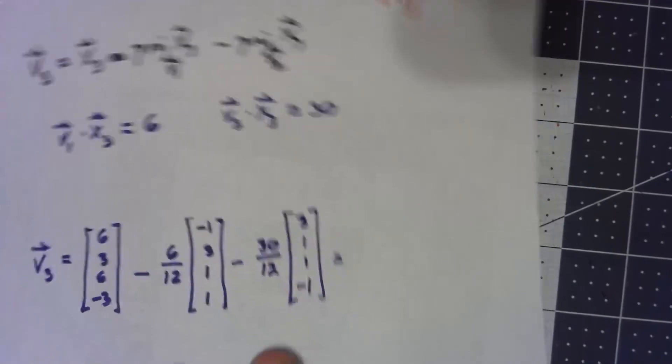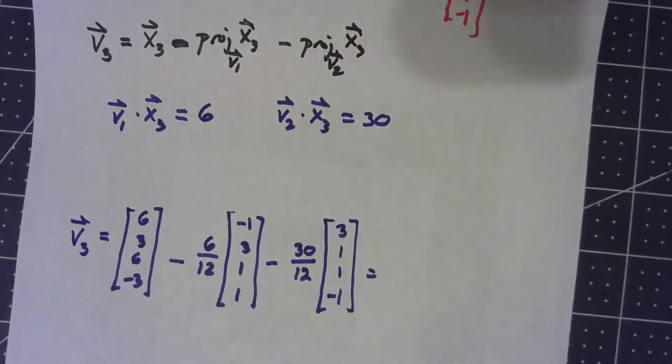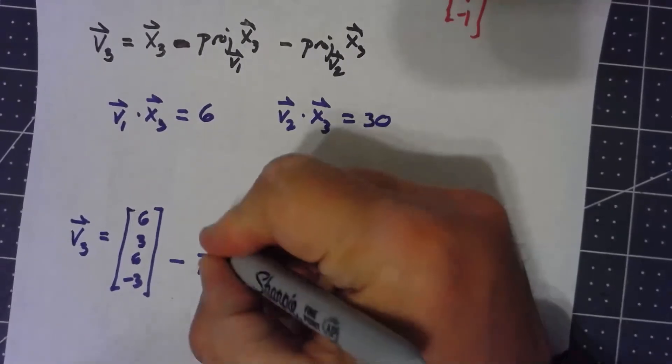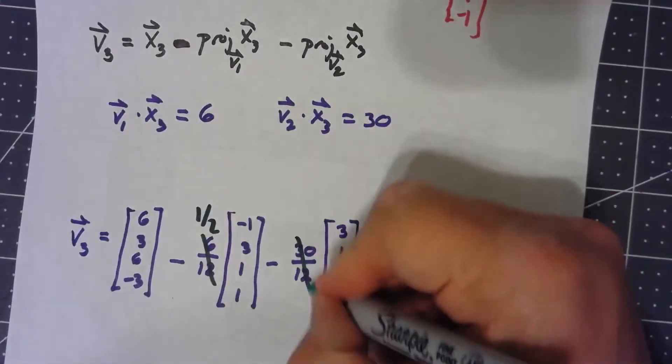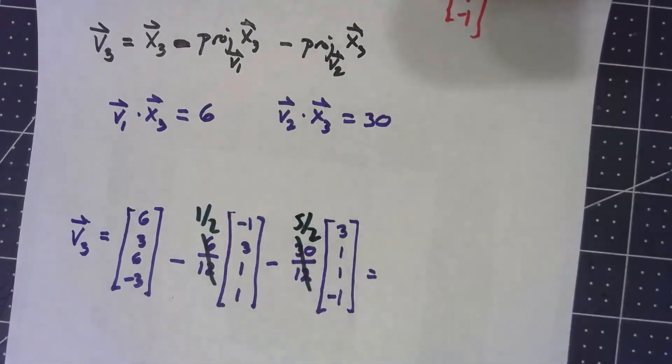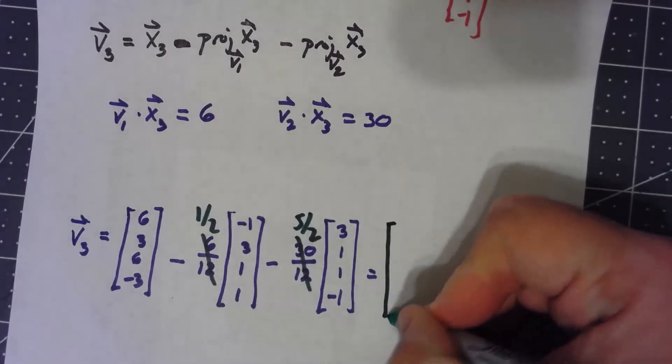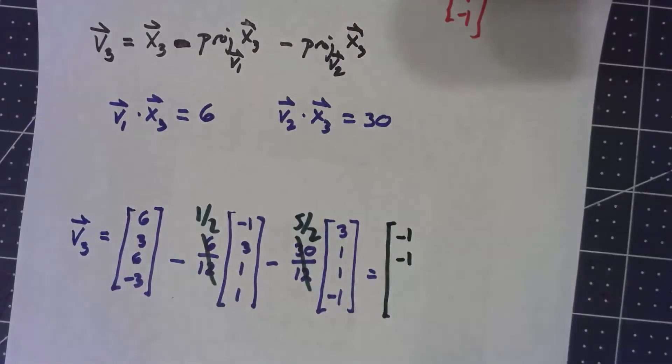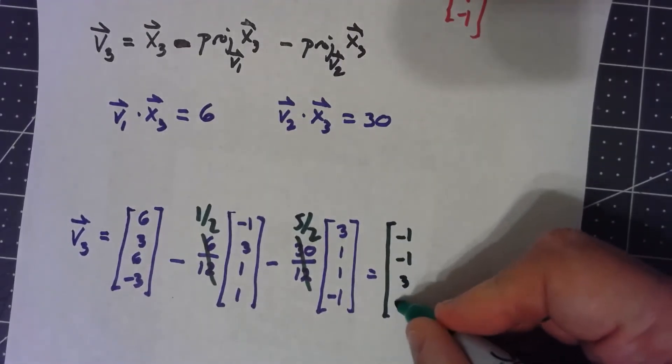From there, it's mainly just a matter of doing some fraction math here. Worth realizing that the 6 twelfths is one half, the 30 twelfths is five halves, so you're just getting a common denominator, and I'll go ahead and just let you figure that out. And we end up with the vector negative 1, negative 1, 3, negative 1.